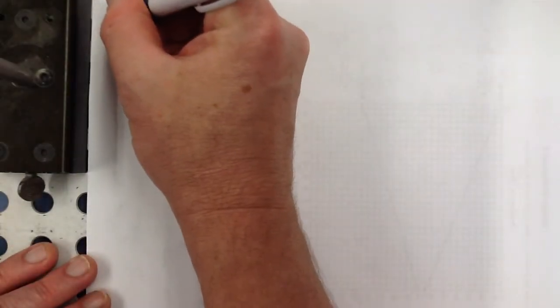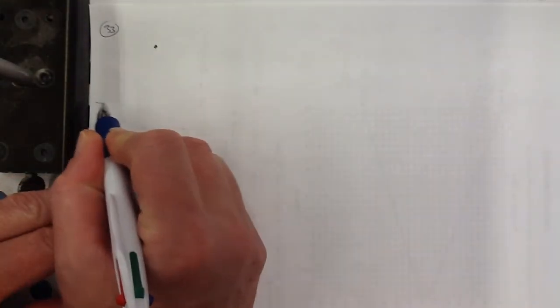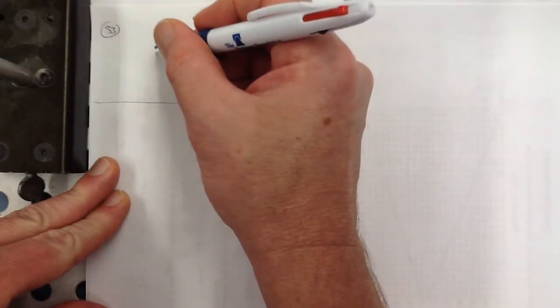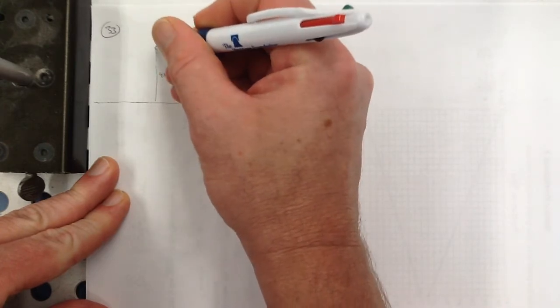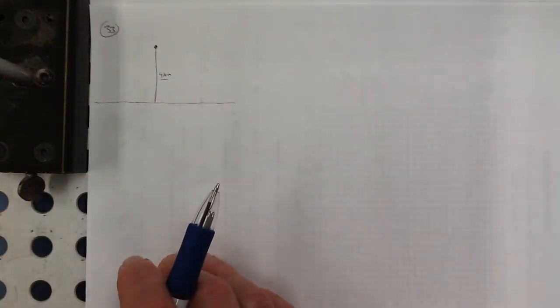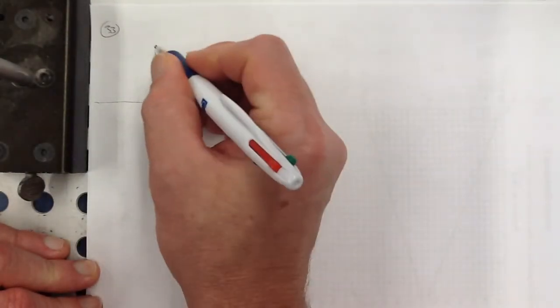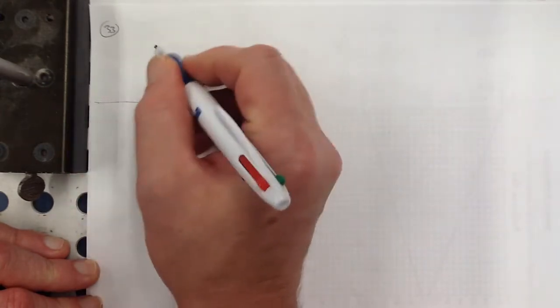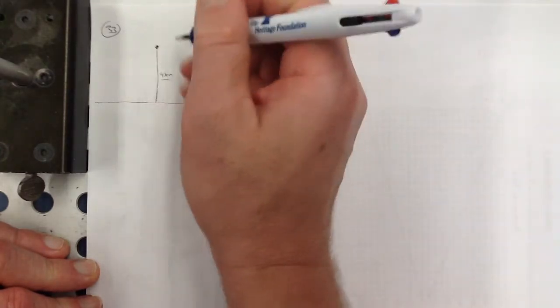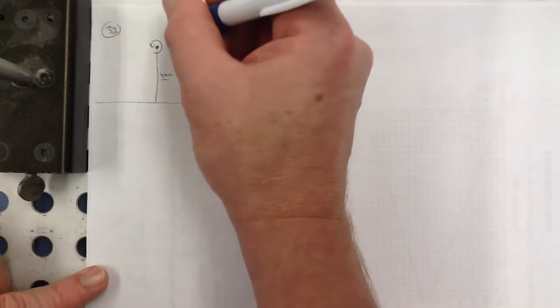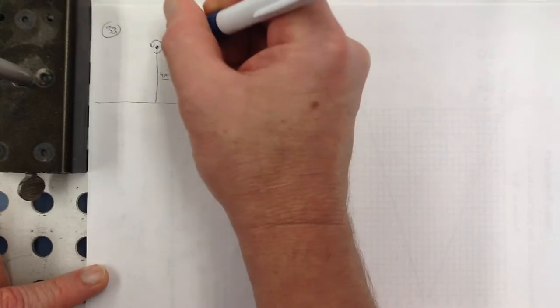Number 33: a beacon makes one revolution every 10 seconds and is located on a ship 4 kilometers from a straight shoreline. Here's the beacon and the shoreline — this is a top view. The 4 kilometers is constant. The beam of light hits the shore, going around at one revolution every 10 seconds.